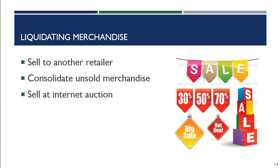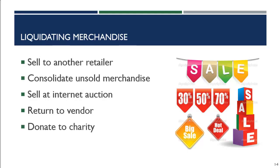You can sell merchandise at an internet auction. Some retailers have their own pages on eBay or Amazon for merchandise no longer selling in-store. Many retailers use their own website's dedicated clearance section for this purpose. Sometimes, if you have enough clout, you can return merchandise to your vendor — part of the negotiation process — as some retailers are able to negotiate return of last season's unsold merchandise. You can also donate merchandise to charity, which looks good as a corporate practice.